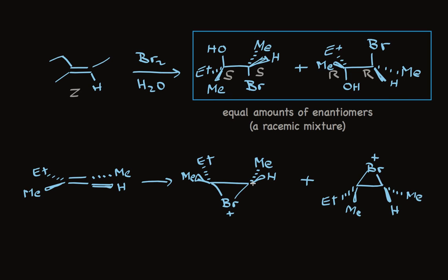It's easy to explain the regioselectivity: the hydroxyl group ends up adding to the carbon that has more alkyl groups. It's also easy to see why we have the stereochemical outcome we do. In the next step, water adds as a nucleophile and must add from the back side — anti-addition. So water must add at the more substituted carbon from the back side. The stereochemistry is fixed, as shown. This is true for both bromonium ion intermediates, each leading to a specific enantiomer.